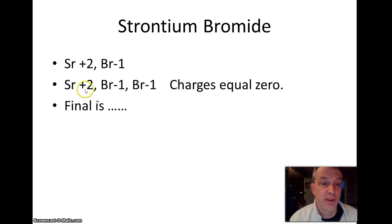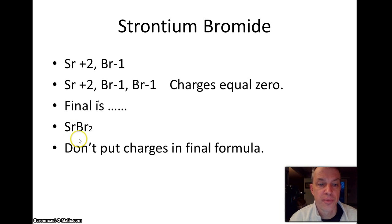So to write it, I need one strontium, two bromides, and there's the final answer. One strontium, two bromides. There's my subscript two. I don't have to put a one here because ones are always assumed. We never put the charges in the final formula. That's a common mistake that often occurs.